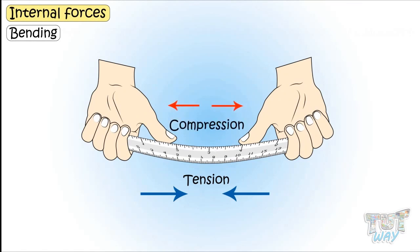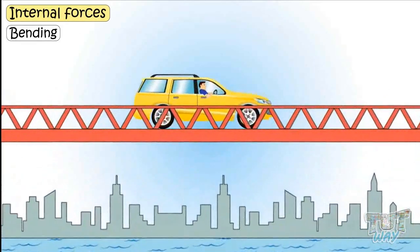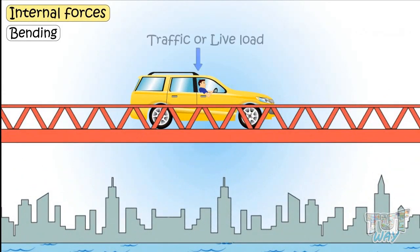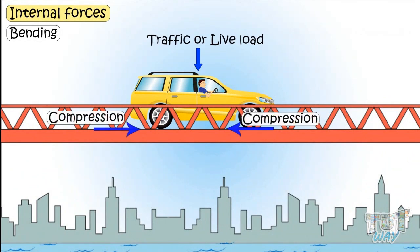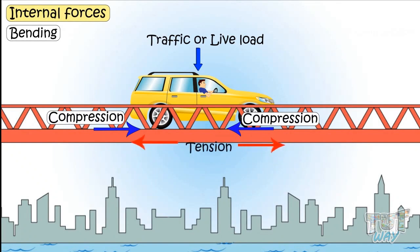This is what happens in the case of beam bridges due to traffic or live load. The upper surface is compressed, or shortened, and develops compression. And the lower surface is elongated and develops tension. Today we learned about internal and external forces.